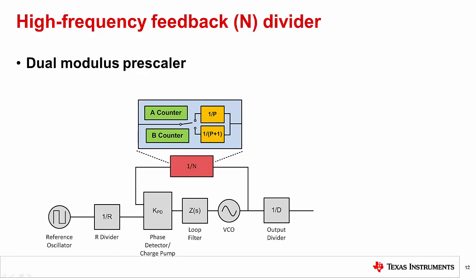Switchable dual-modulus prescalers allow higher frequency division without sacrificing resolution. The way it works is the divider first starts by dividing the VCO frequency with the prescaler and the pulse swallow circuit. After every P-plus-1 VCO cycles, both the A and B counters are decremented by one count. After A times P-plus-1 cycles, the A counter reaches zero, the B counter has B-minus-A remaining counts, and the pulse swallow circuitry is disabled.